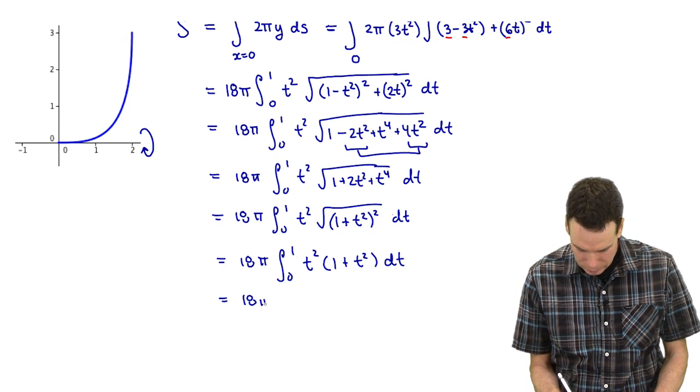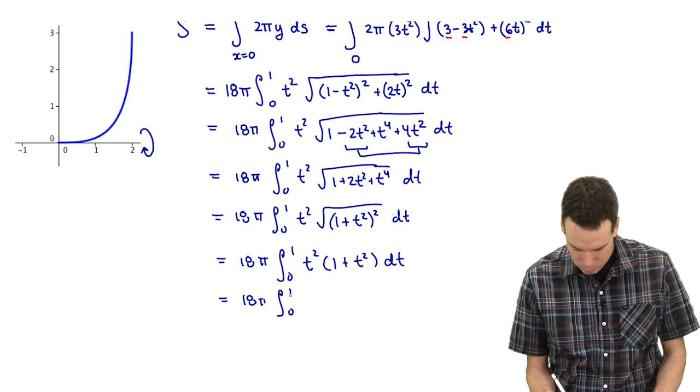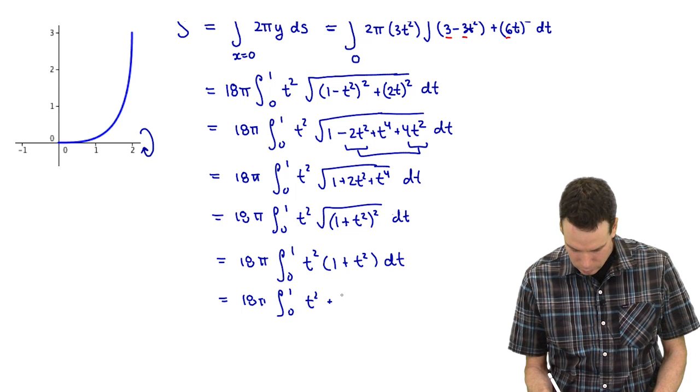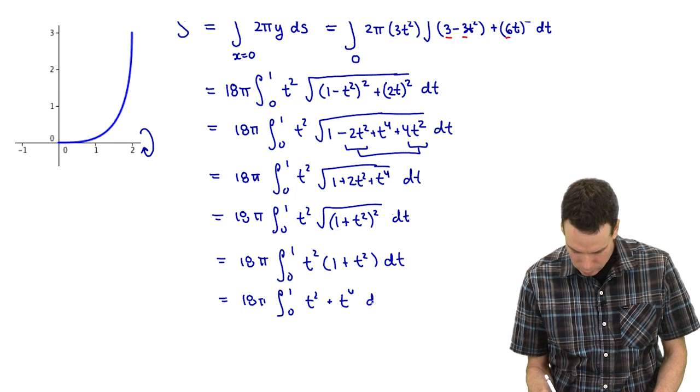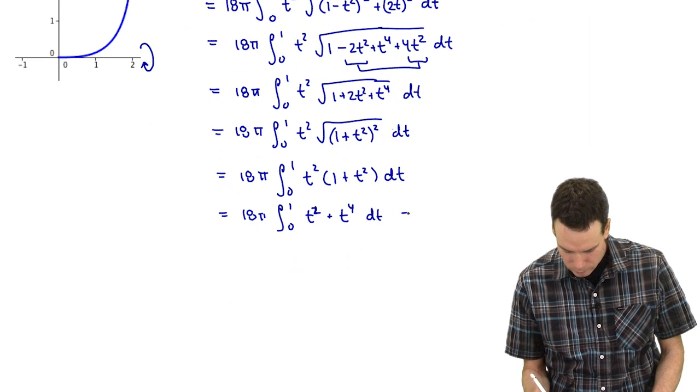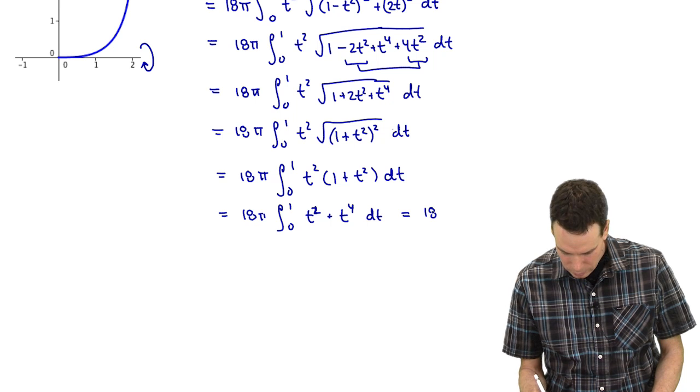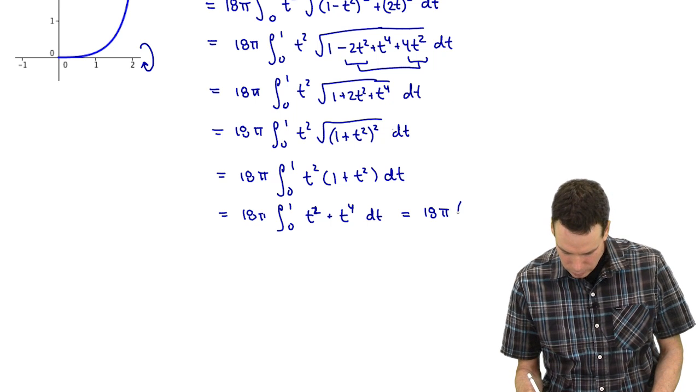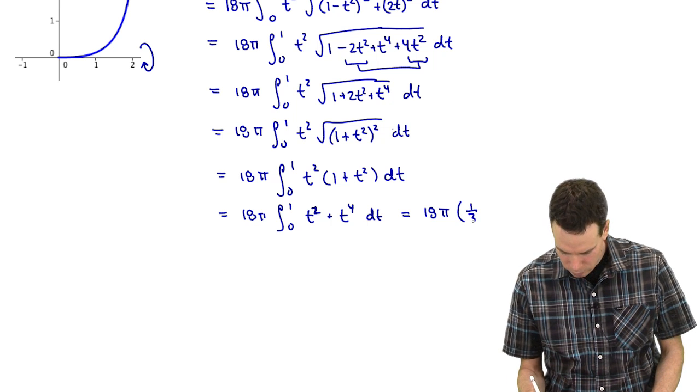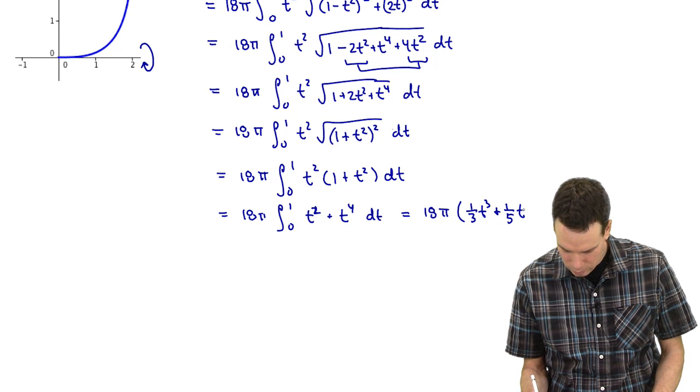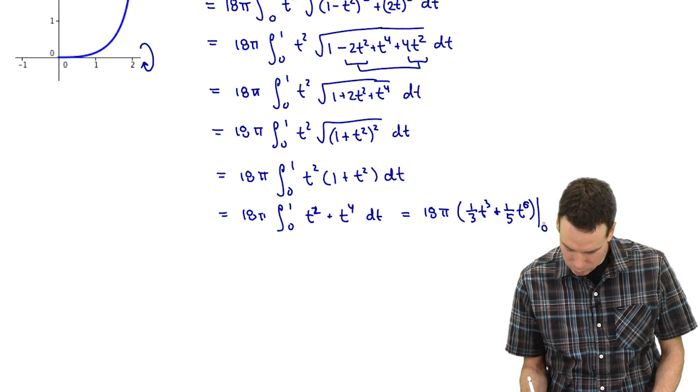Beautiful because now this is just a polynomial that we need to integrate. So that's t⁴ dt, so it's t² + t⁴ dt. That was 18π out front. The antiderivative is (1/3)t³ + (1/5)t⁵ from 0 to 1.